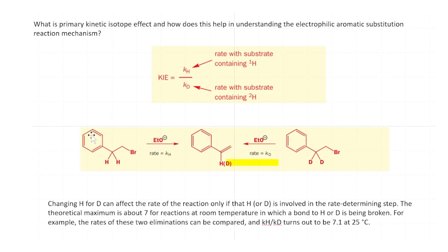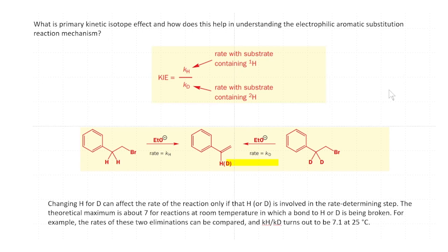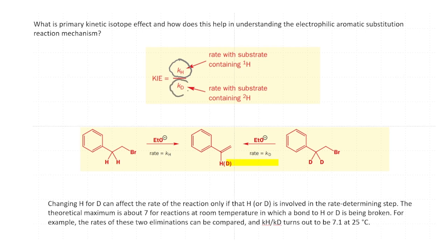What is the primary kinetic isotope effect and how does it help in understanding the electrophilic aromatic substitution reaction mechanism? The kinetic isotope effect is defined as the rate constant for a reaction with hydrogen divided by the rate constant of the same reaction when hydrogen is replaced by deuterium. This is a very powerful technique to understand reaction mechanisms.